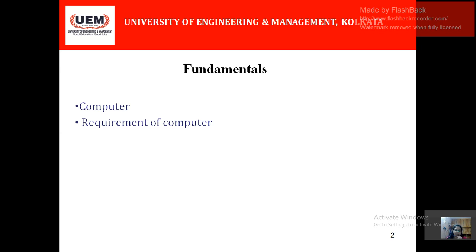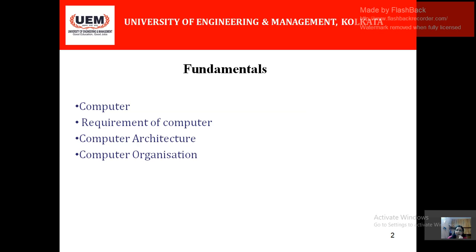Computer architecture basically deals with how the components of the computer are made, how they are connected, and things like the instruction set, instruction format, instruction addressing mode, and how the peripherals are connected. All these things belong to computer architecture — it refers to the parameters which are visible at the user end.